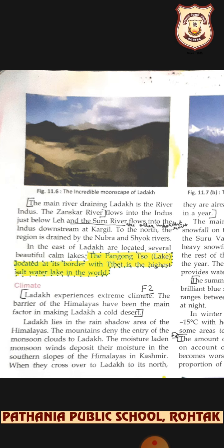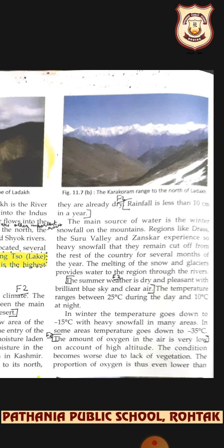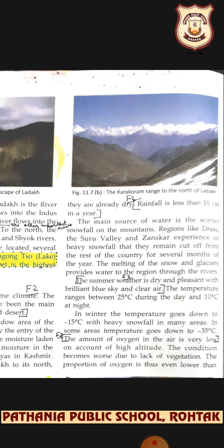In spite of being an arid region, Ladakh has great diversity of birds. Robins, redstarts, finches, hoopoes, and the brown-headed gull are some migratory birds found in summer. Brahmani ducks and bar-headed geese are found in the wetlands throughout the year. The black-necked crane, known as 'thung thung' in Ladakh, is a rare species found here and on the Tibetan plateau.